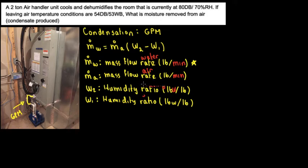Humidity ratio number two is the entering condition, and W1 is the leaving condition. If we have all of these variables, we're going to be able to calculate how many GPMs — gallons per minute — of water are condensated.